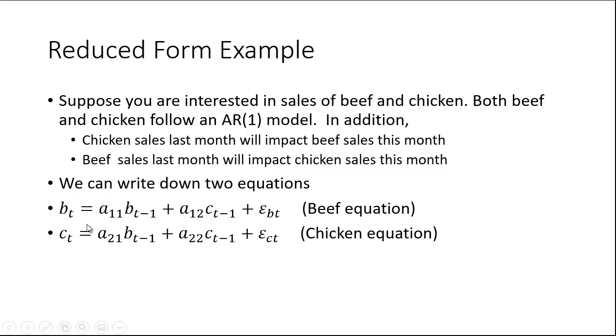You have this model: beef in time period t equals some coefficient times beef in the previous period plus another coefficient times chicken sold in the previous period plus an error term. Likewise with chicken: chicken in the current period equals some coefficient times beef in the previous period and another coefficient times chicken in the previous period and an error term.